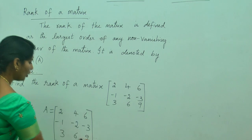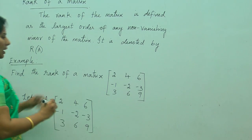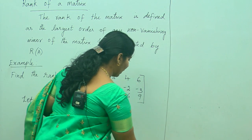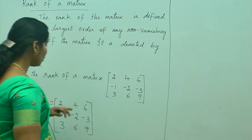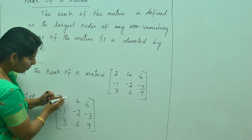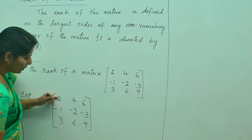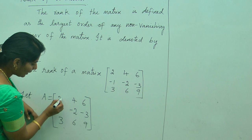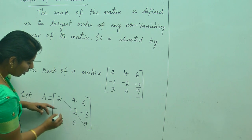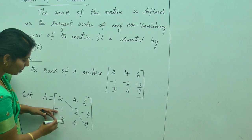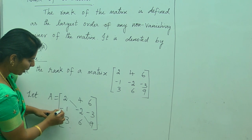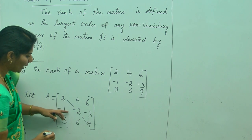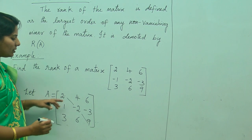To find the rank of the matrix, as I told you earlier, I am going to apply the upper triangular matrix method. The elements below the leading diagonal should be zero. The diagonal elements are identified, and the elements below that diagonal are -1, 3, and 6. We need to make these three elements zero.